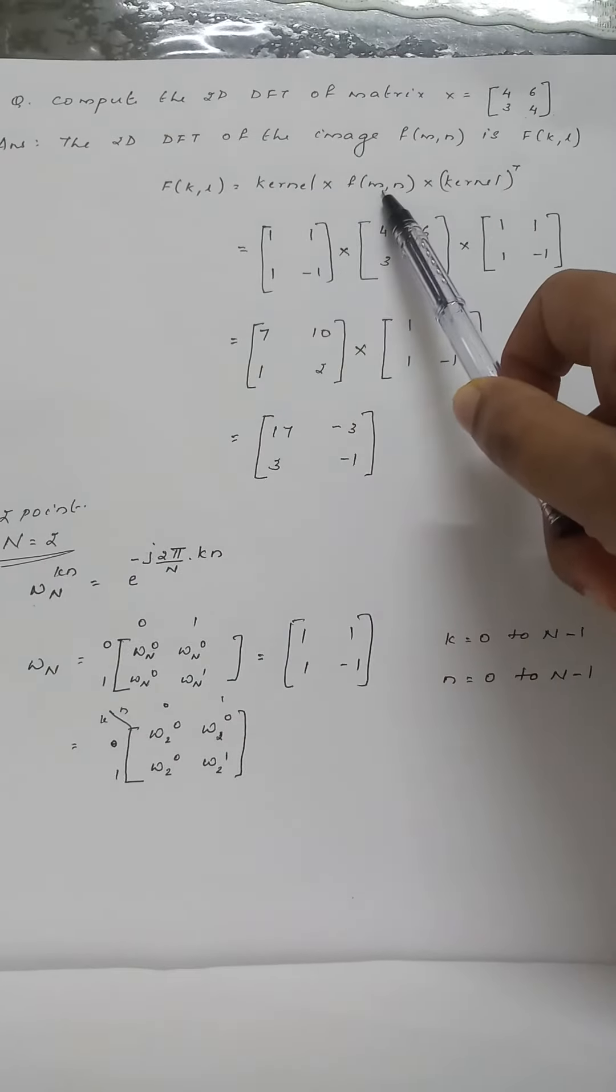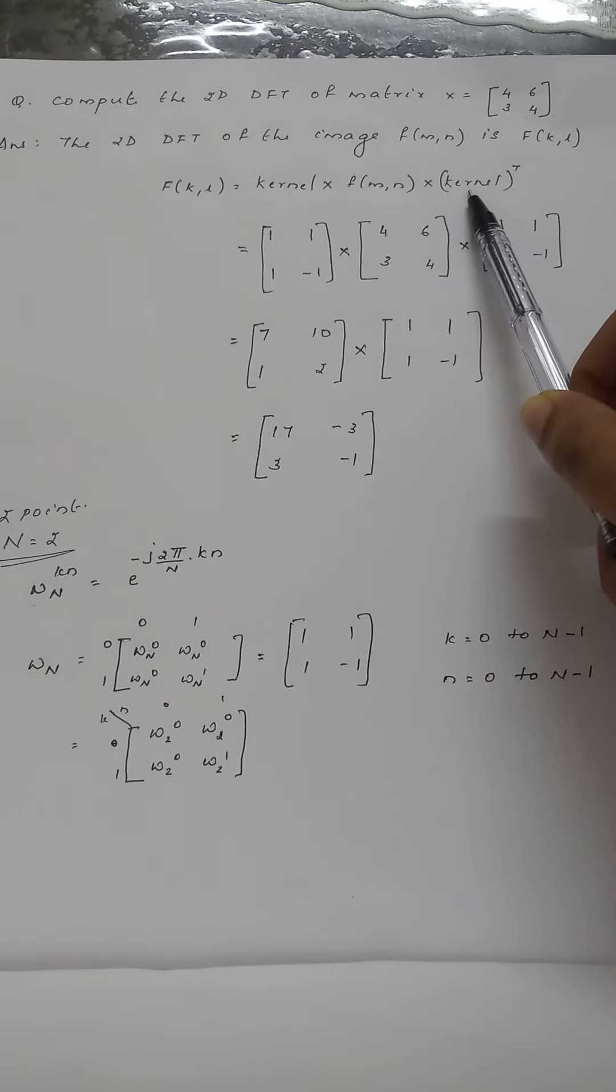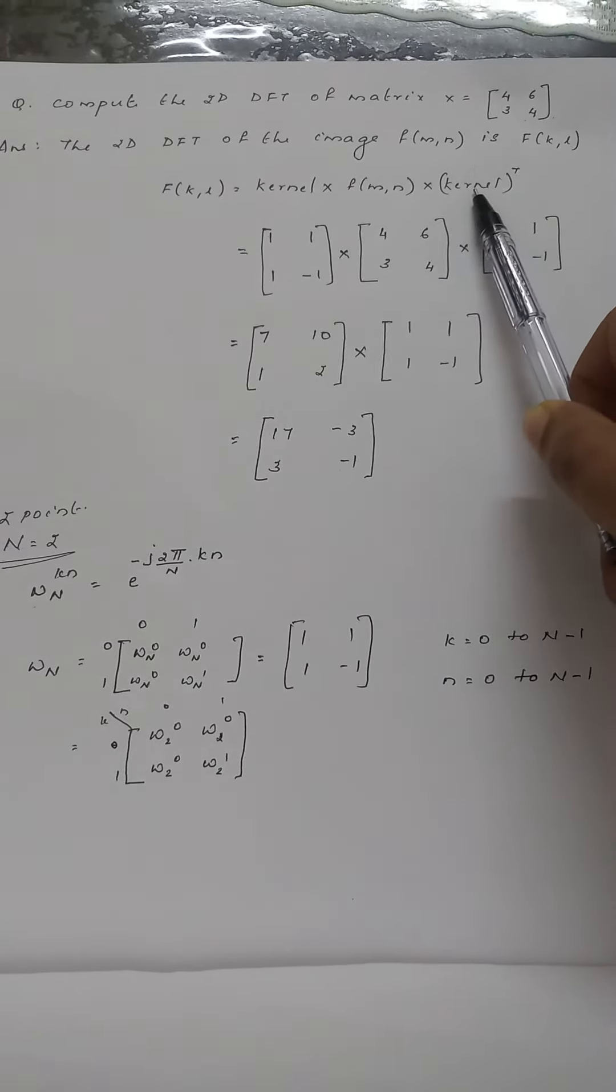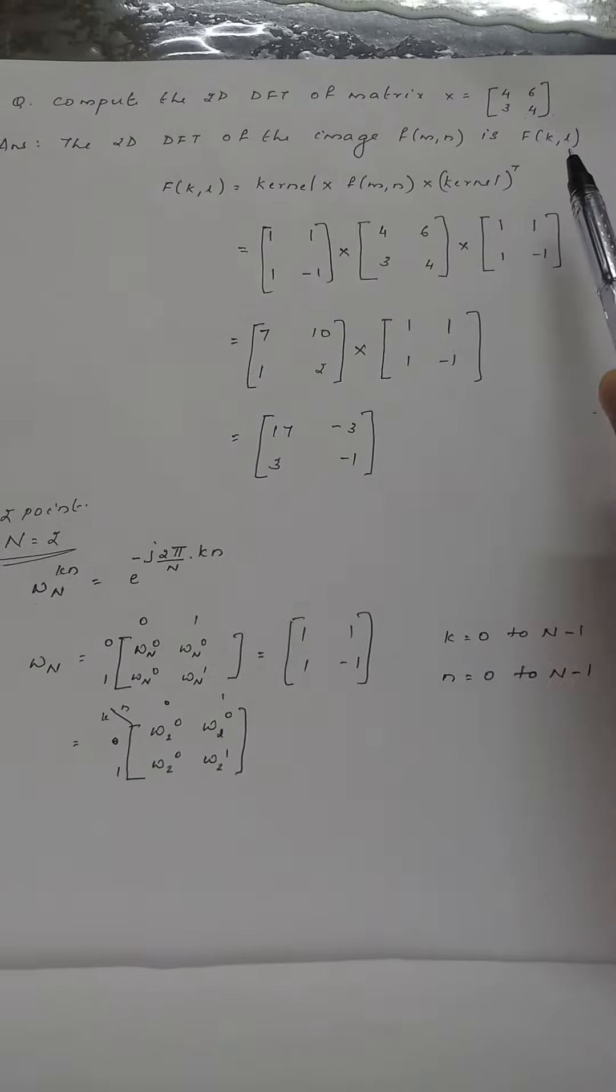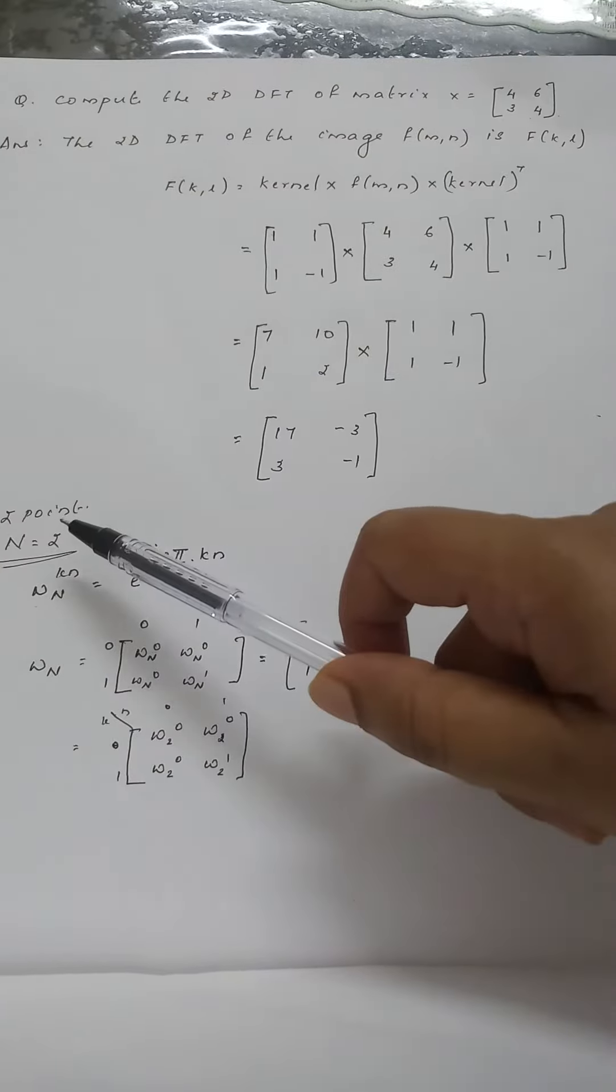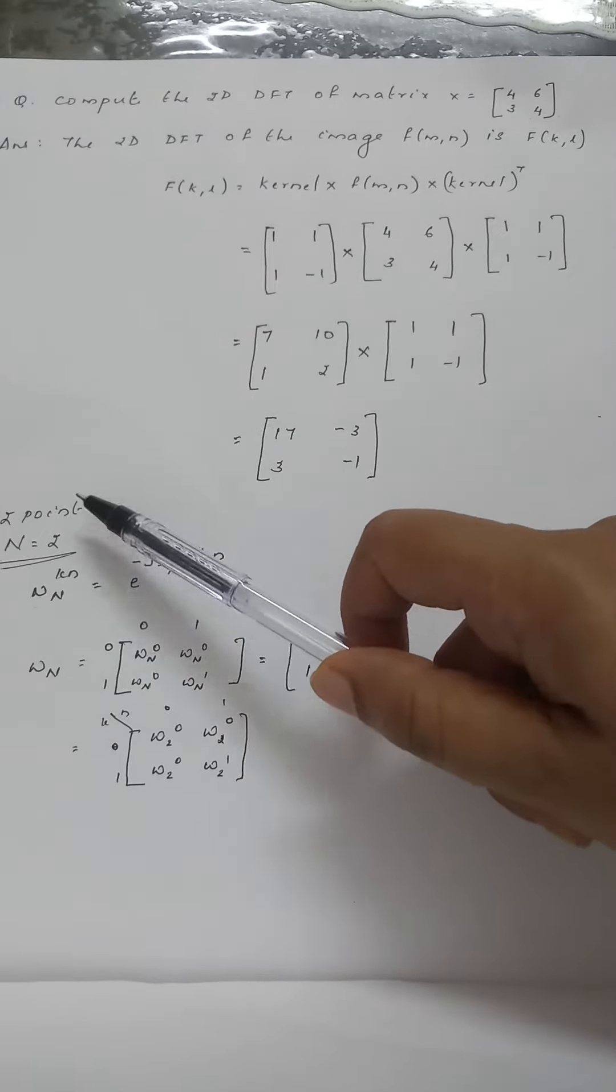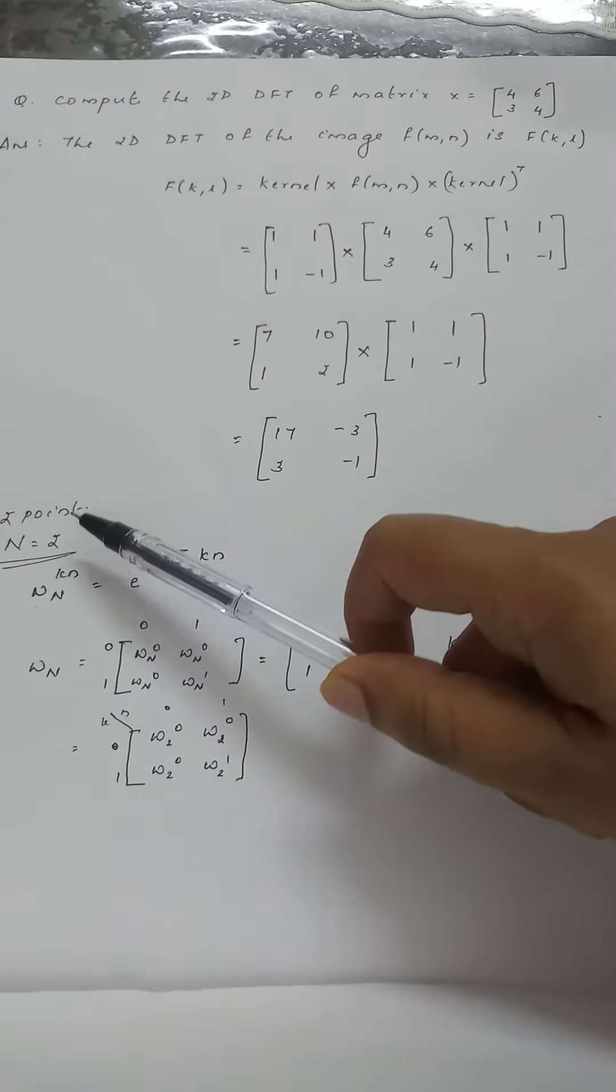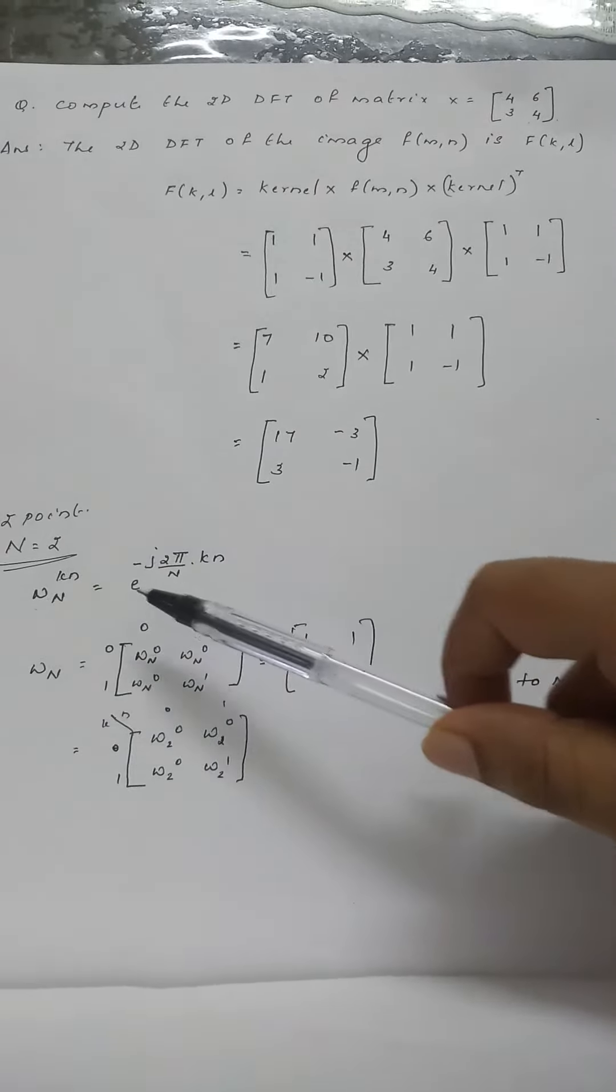F(k,l) equals kernel times f(m,n) times kernel transpose. So how to find the kernel? This is a two-dimensional image and it is a two-point problem. To find the kernel for two-point, n equals 2, and we need to find the 2D matrix.